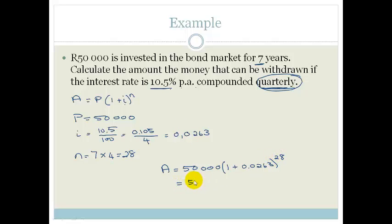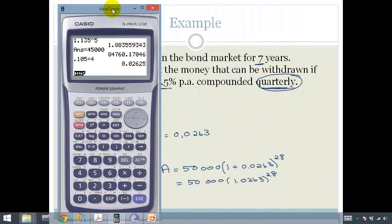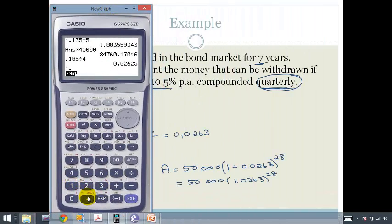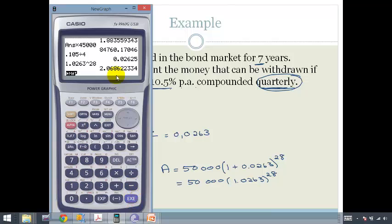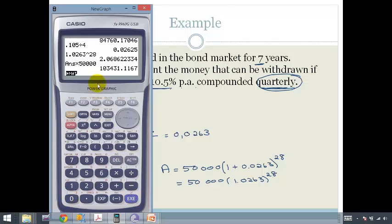So that becomes 50,000 times 1.0263^28. So let's just get out our calculator and do that. We've got 1.0263^28 is 2.0686 times 50,000, equals 103,431.12.